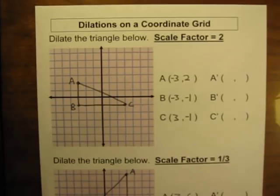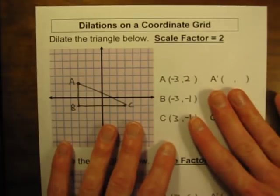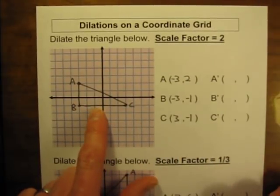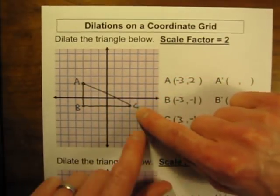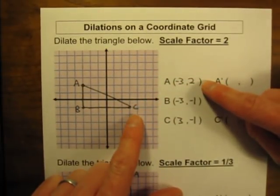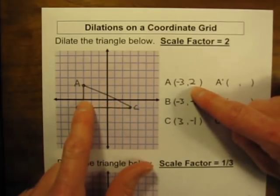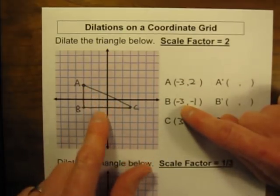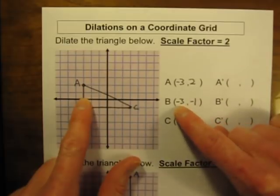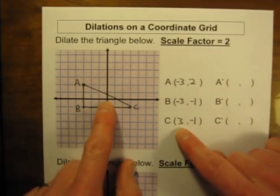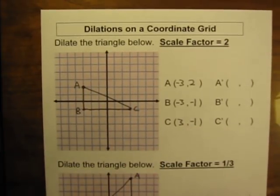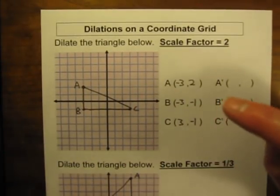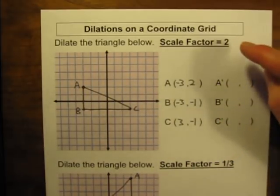So after a dilation, the new image will not be congruent to the original image. What I have here is a triangle that I would like to dilate. I have the vertices labeled as A, B, and C. A is negative 3, 2; B is negative 3, negative 1; and C is 3, negative 1. We are going to dilate this triangle using a scale factor of 2.